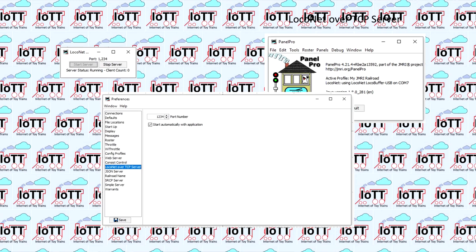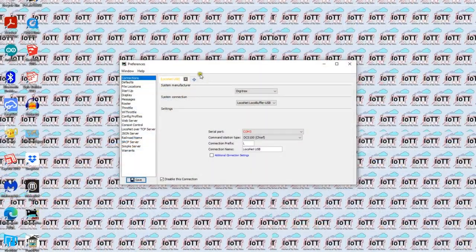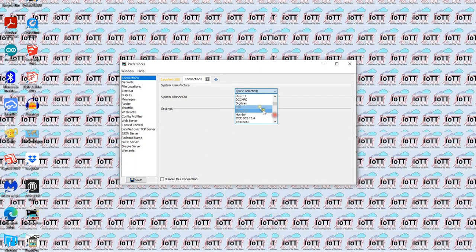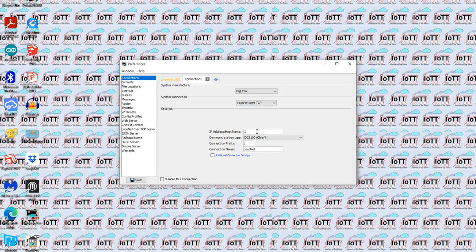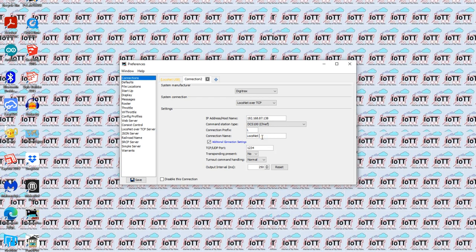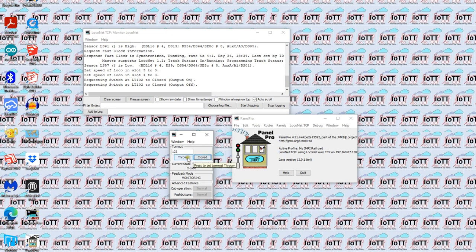After restarting JMRI, you will see an additional window opened that shows the number of clients that are connected to the server. At startup, of course, this is zero. I can now open JMRI on another computer and create a new connection for Digitrax, but this time I select LocoNet over TCP. I then enter the IP address of the computer that runs the server and after the necessary restart, JMRI will connect to the LocoNet over TCP server and be able to receive and send LocoNet messages as if it were physically connected to the LocoNet.